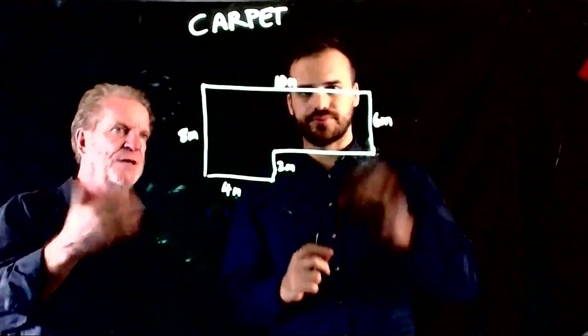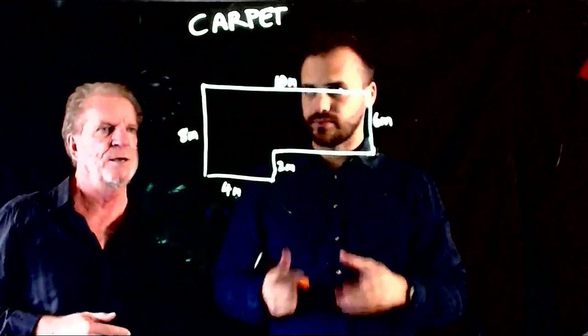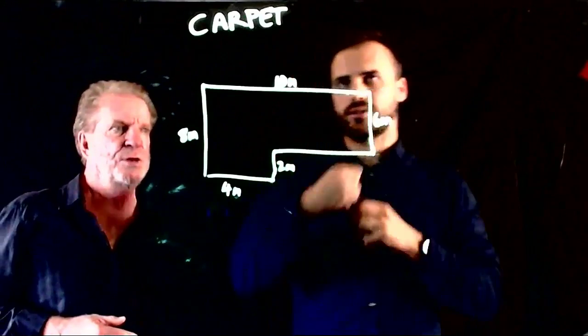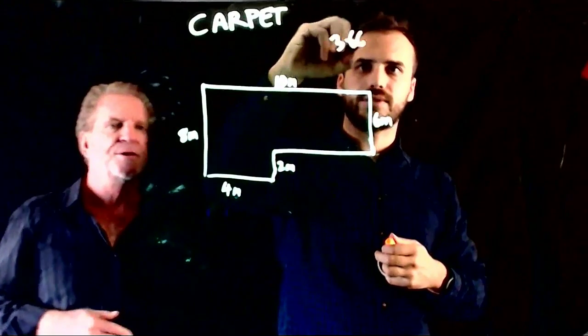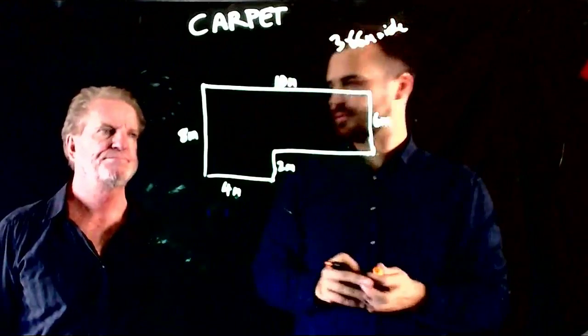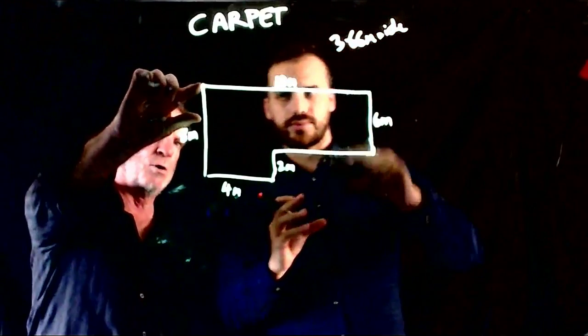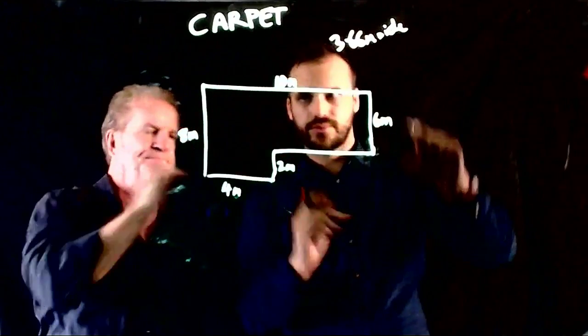We need to figure out the total length of carpet we're going to buy. Carpet always comes in strips that are exactly 3.66 meters wide. So we'll roll lengthwise again.